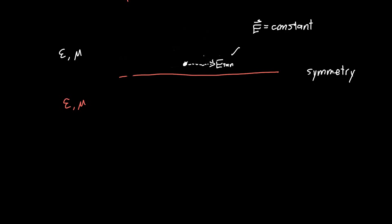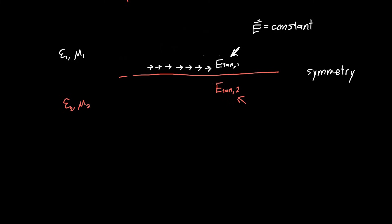We're just going to worry about the normal component separately and deal with it later. So for now, we're just worrying about the tangential field. Let's call this the tangential field in Material 1 — Material 1 in white, Material 2 in red. We'd like to relate this to the electric field just on the other side of the interface — the tangential component in Material 2. One thing I can do is use Maxwell's equations. One of Maxwell's equations involves a line integral of the electric field — integrating it over a closed loop. I'm going to choose that loop so that it includes all of these fields, giving me the tangential field on one side and the tangential field on the other side.